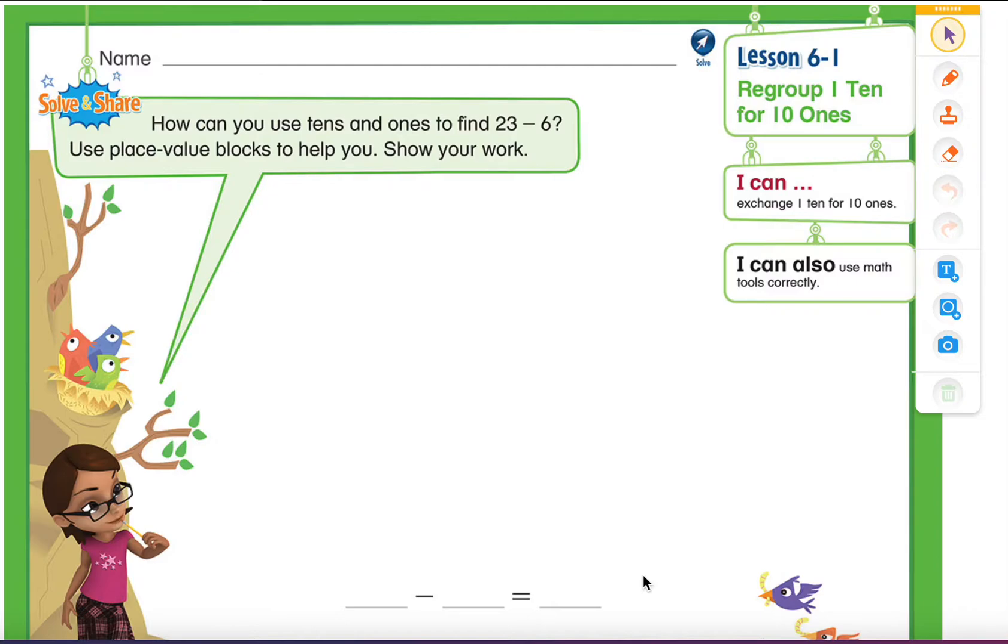How can you use tens and ones to find 23 minus 6? Use place value blocks to help you show your work. So what we are going to do is write down our place values. First, we have tens and ones, so let's write our tens here. These will be our tens, and then we are going to write our ones. So these are our ones.